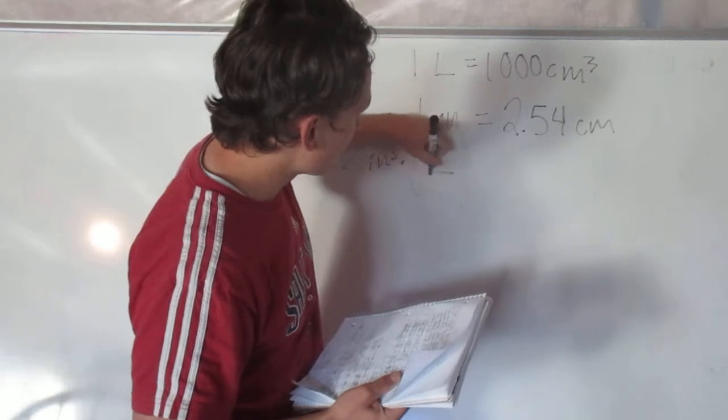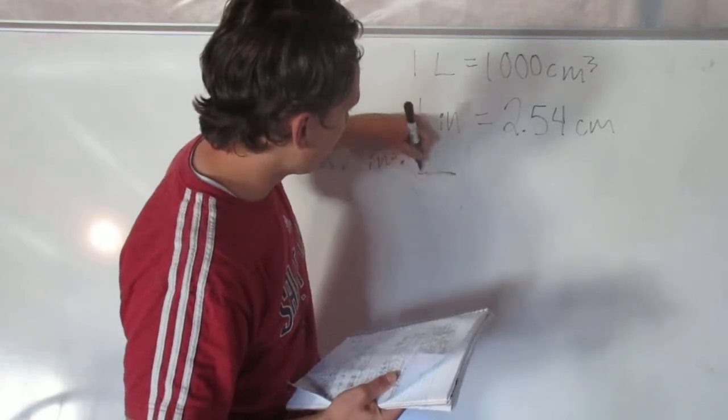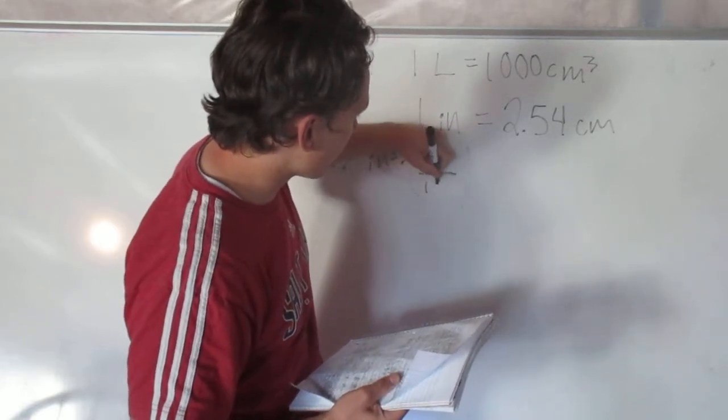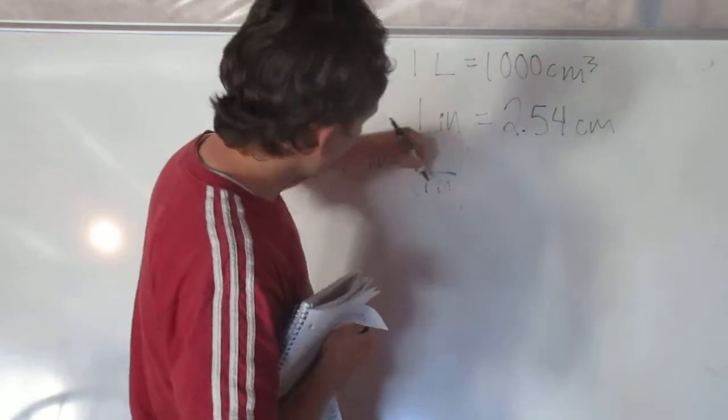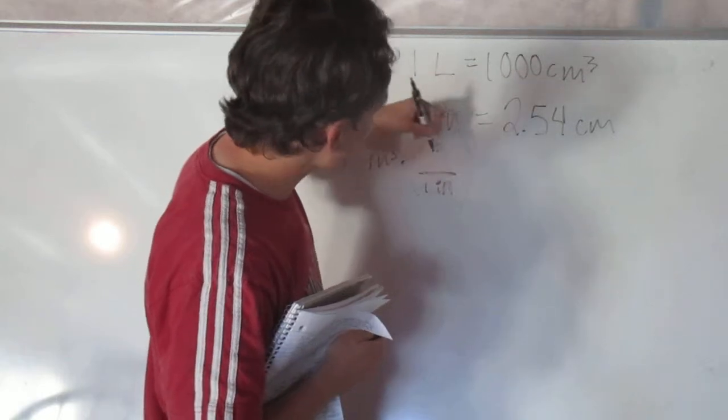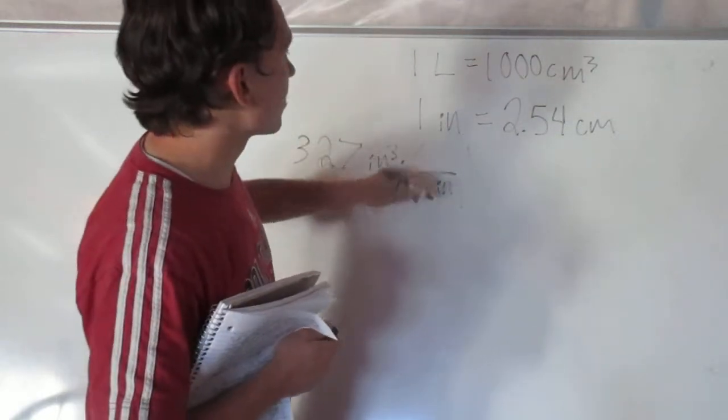So I'm going to go here. I have a ratio with inches. I can say 1 inch—I'm going to put this at the bottom so that it cancels out. So 1 inch I'm going to put that at the bottom so that it cancels out there.